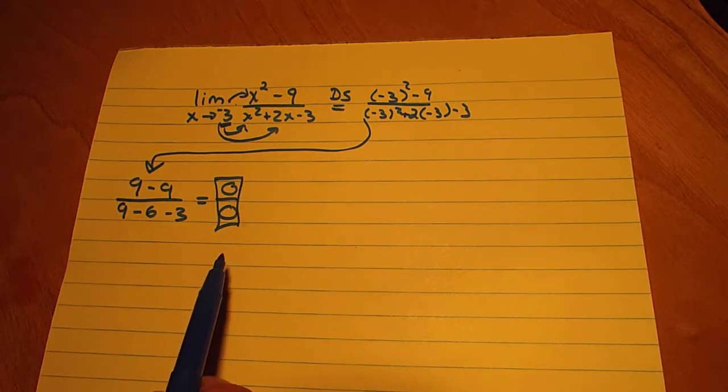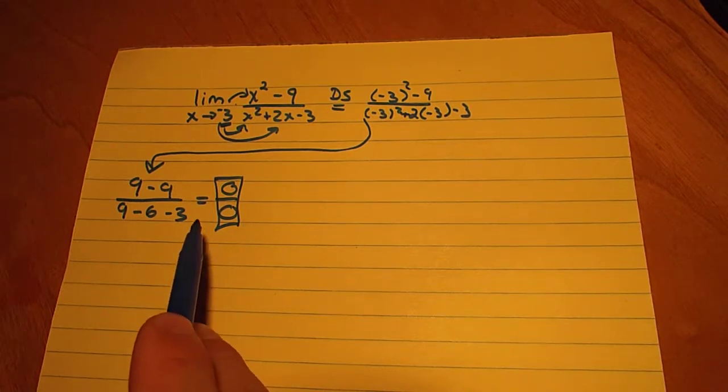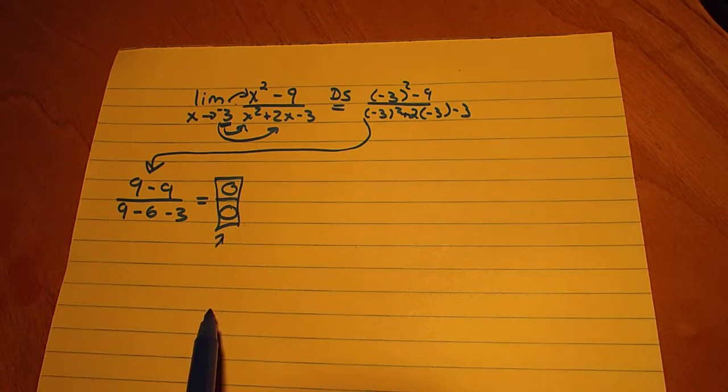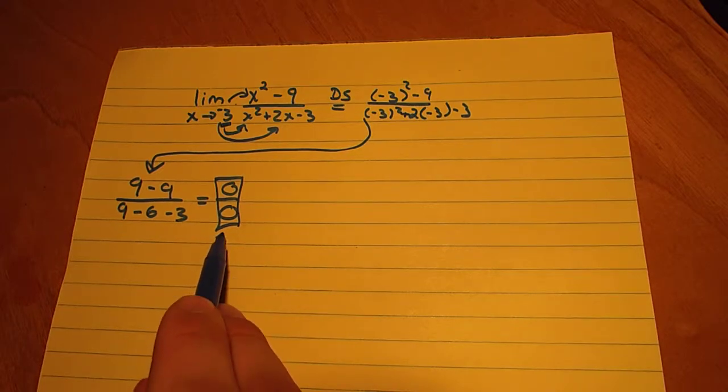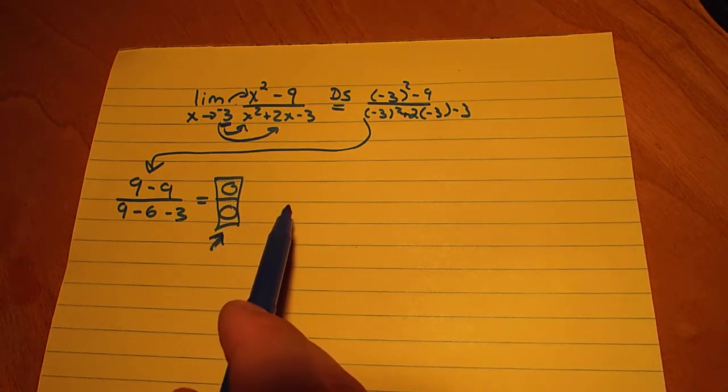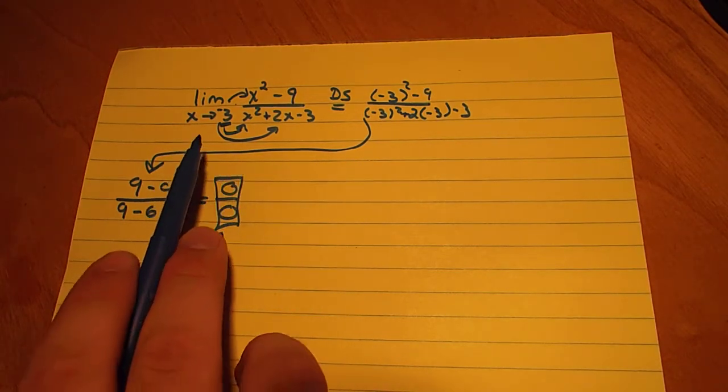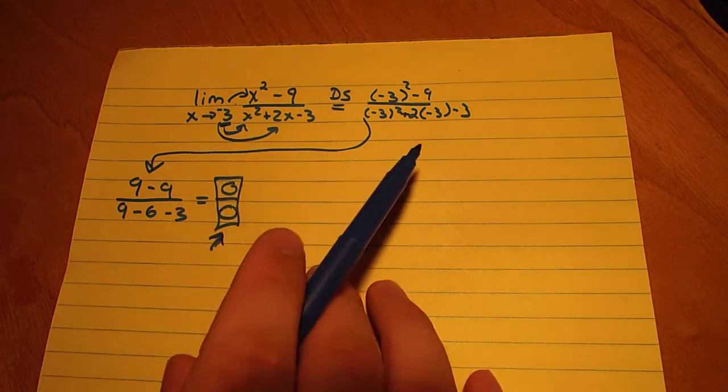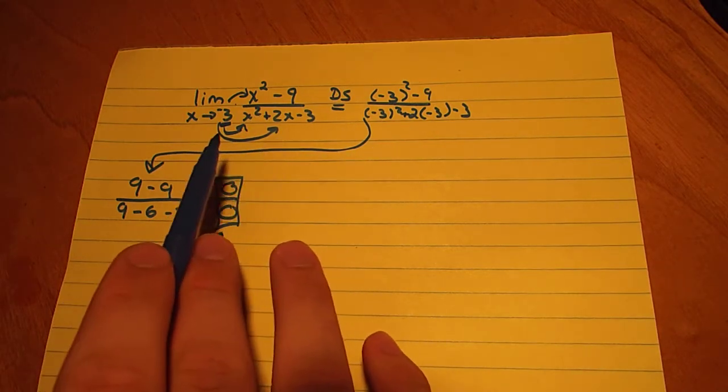Now when we solve limits, we know that first of all with any problem you can't divide by 0. That makes it an impossible and undefined number.